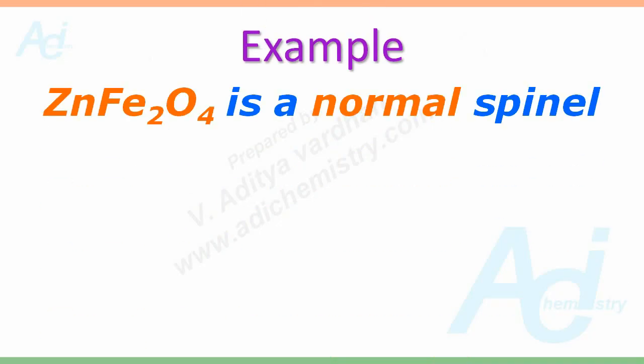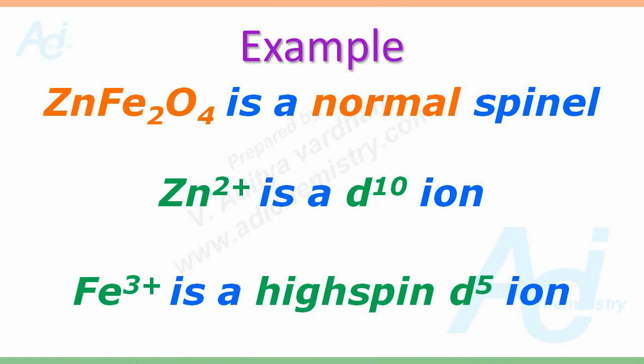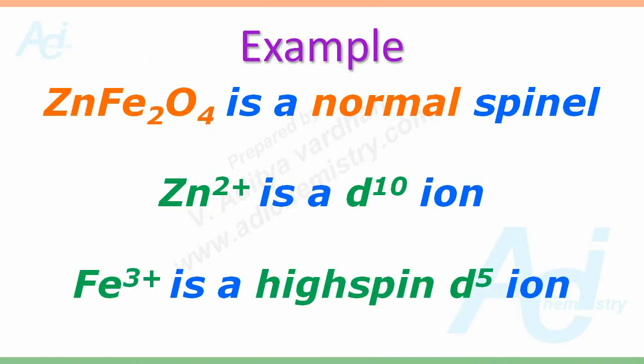For example, ZnFe2O4 is a normal spinel because Zn2+ is a D10 ion and Fe3+ is a high spin D5 ion.